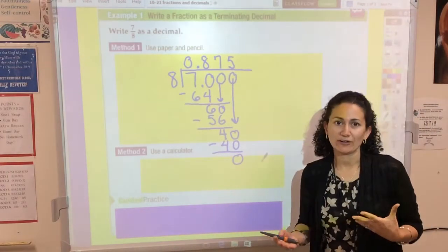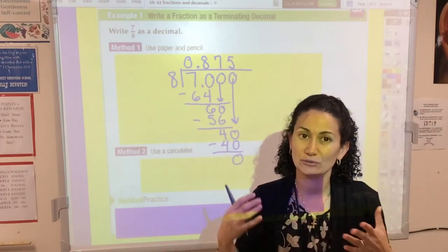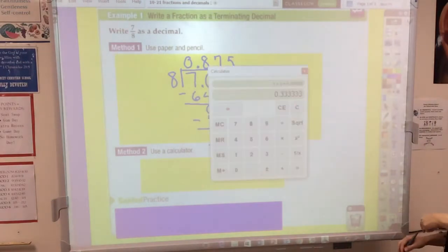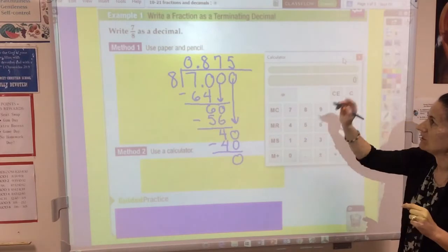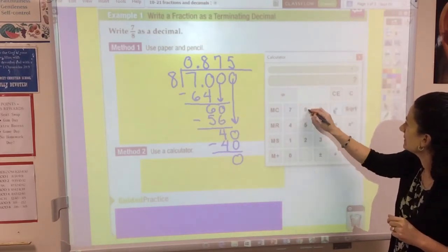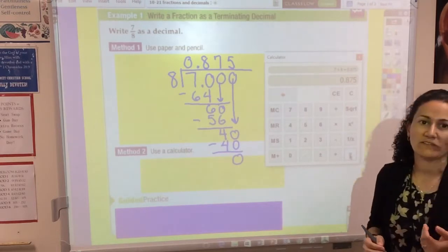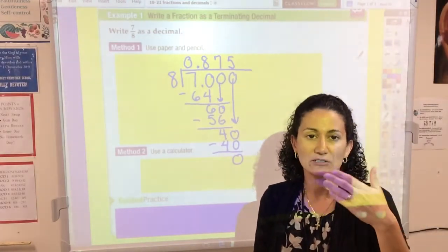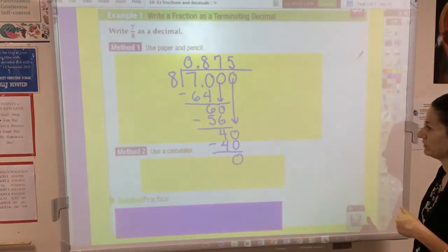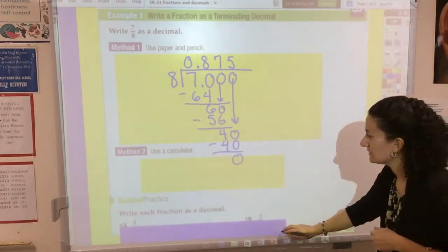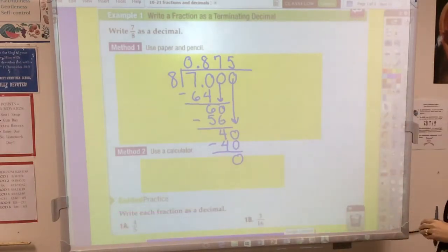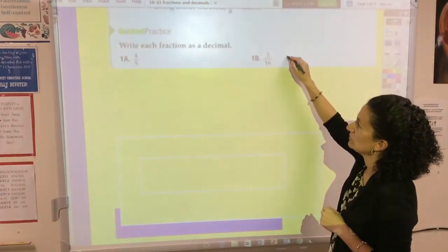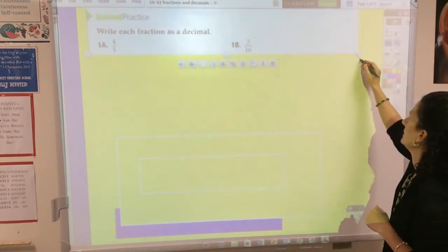Method number two: use a calculator. Obviously, I don't want you to use a calculator to figure out the work because I want to practice division, but you may check your work with a calculator. Don't forget to punch in the numerator first: 7 divided by denominator equals 0.875. If you have one of those fancy calculators, you can actually punch in the fraction and it will convert it for you. I'd like you to try some. These are pretty simple terminating decimals. Try 4/5 and 3/16, pause the video, unpause when you're finished.